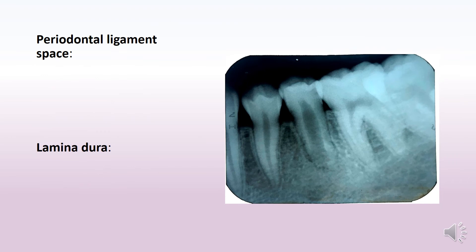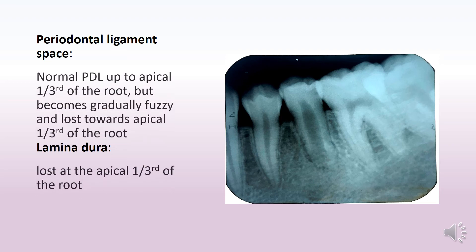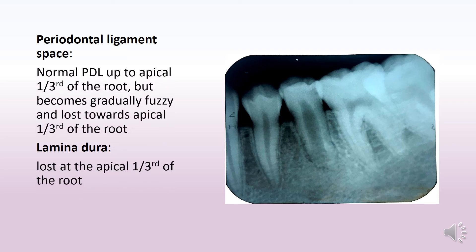Moving on to the periodontal ligament space and lamina dura: we notice normal PDL space up to the apical one-third of the root. The cervical and middle portions of the root show normal PDL as well as normal lamina dura. However, as we move to the apical part, the PDL becomes gradually fuzzy and is no longer visible, and the lamina dura is lost at the apical one-third.